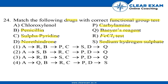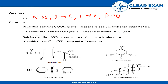Moving on to the solution: Penicillin contains a COOH group, so it responds to the sodium hydrogen carbonate test. Chloroxylenol contains an OH group that will respond to the neutral FeCl₃ test. Sulfapyridine — the NH₂ group responds to the carbylamine test. And Norethindrone's terminal C≡CH (triple bond CH) responds to Baeyer's test.